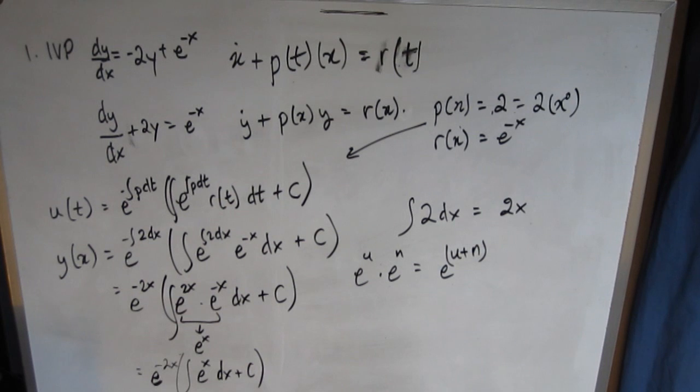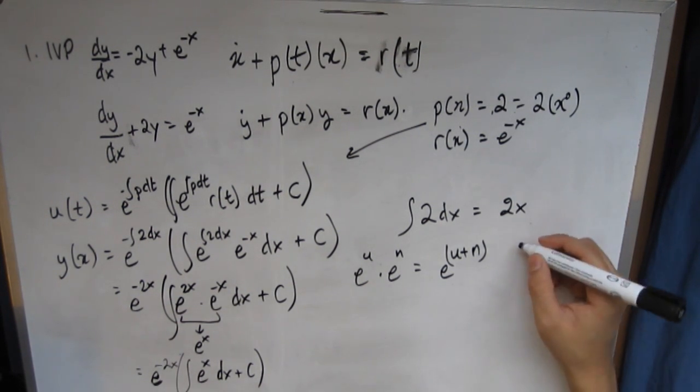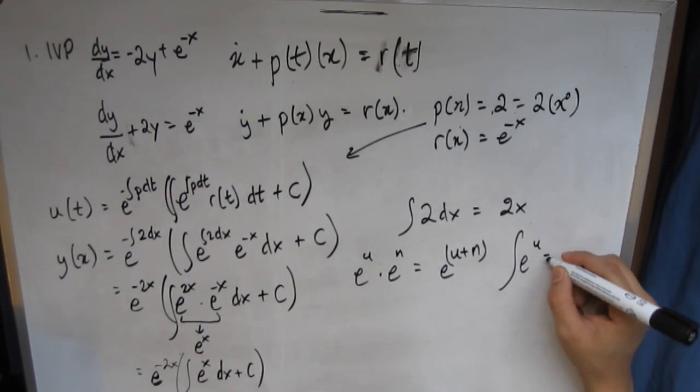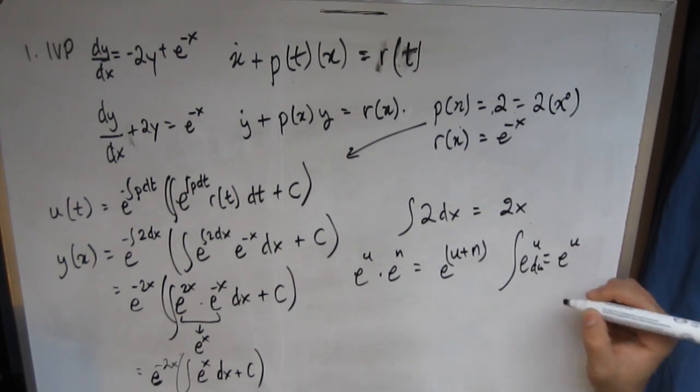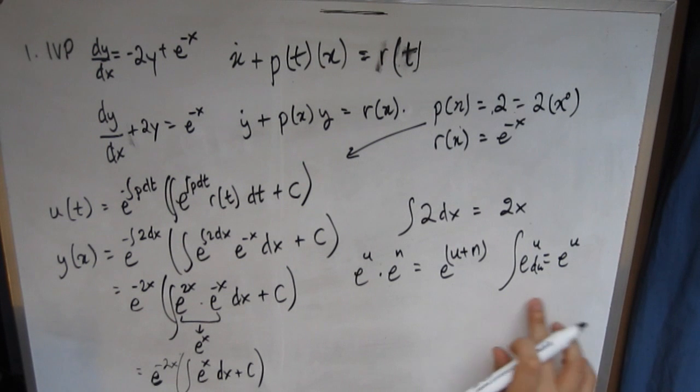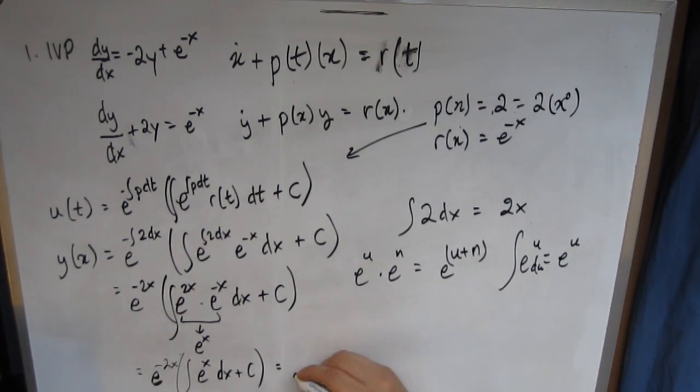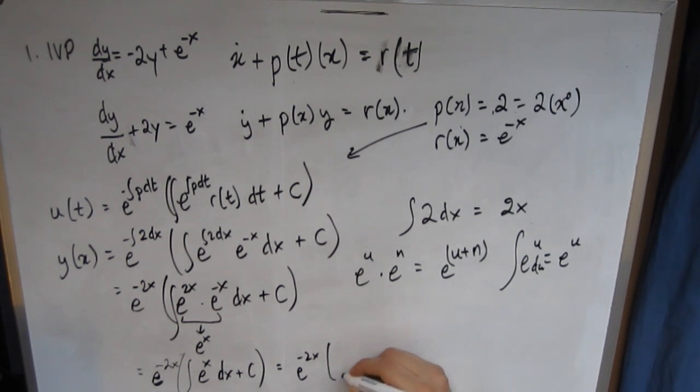Very simple, actually, because I'm hoping everyone knows this, but integral of e^u is always going to be e^u. Using this property, we can just basically assume this is going to equal e^(-2x) × (e^x + c).